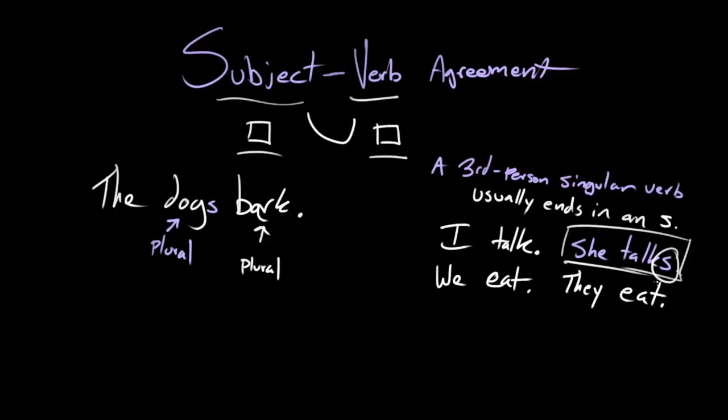So if you're trying to figure out how to make something agree, if you're unsure as you're writing, and you're looking at a sentence like the dogs bark, and you can't figure out if it's supposed to be the dogs bark or the dog barks or the dogs barks, ask yourself first: what is the subject of the sentence? First find the subject, and then ask yourself, is it singular or plural?